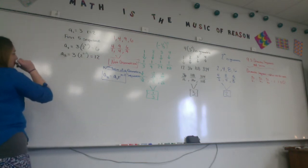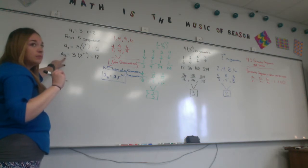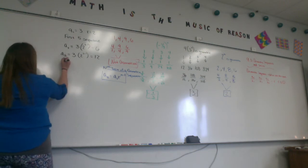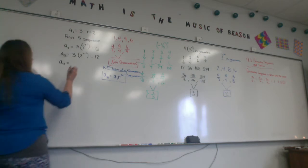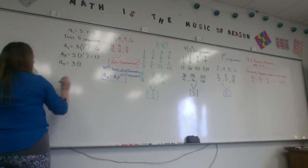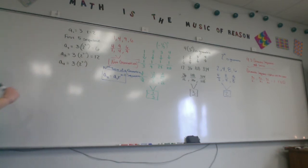Why did that change to an a3? Because I'm finding the third term. Second term, third term, now I'm going to make an a4, finding the fourth term. The first term is still 3. My ratio is still 2. So, then I have 4 minus 1. 4 minus 1 is 3. 2 cubed is 8. And 8 times 3 is 24.